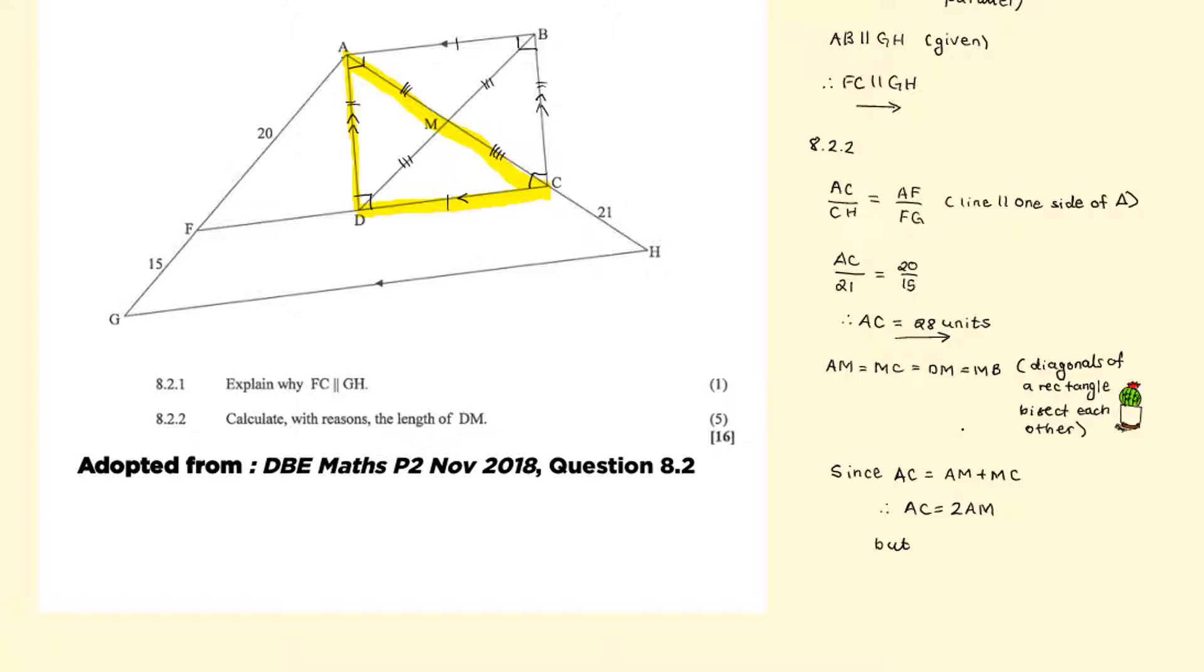But again, from the diagonals you have that AM equals DM. Therefore AC equals twice DM. Meaning that DM equals one half of AC, which is 28. This gives us 14 units for DM.